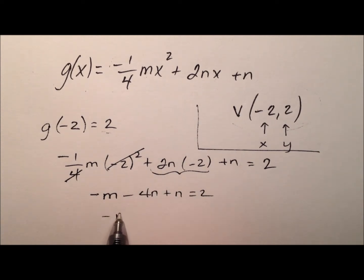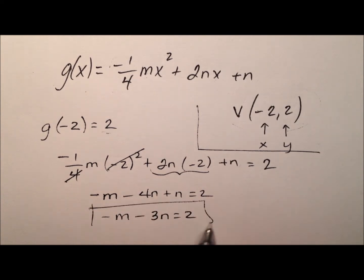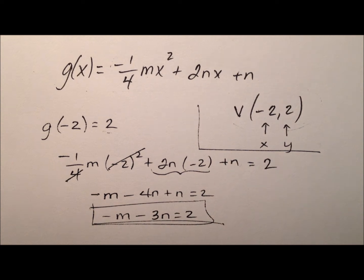And I can just kind of wrap this up. So, negative m minus 3n equals 2. And we have a nice relationship going right here between m and n.